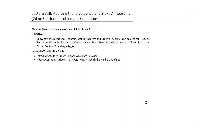Welcome to Lecture 31b entitled 'Applying the Divergence and Stokes Theorem' in 2D or 3D under problematic conditions. This material comes from Reading Assignment 4, Section 4.8. The objectives are to show how the divergence theorem, Stokes theorem, and Green's theorems — which are essentially the 2D equivalents — can be used for irregular regions or when the field is undefined at one or more points.